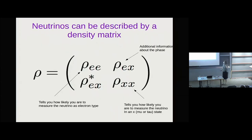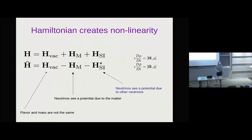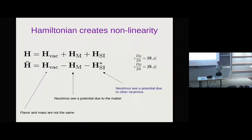You can cast neutrinos in the form of a density matrix. Once you do that, you can in principle solve the quantum kinetic equations, where you evolve the density matrix according to both the Hamiltonian and the collisions. I'm going to drop the collisions for now and just look at the Hamiltonian. The Hamiltonian has three pieces, and the piece that causes all the problems is the neutrinos interacting with other neutrinos.